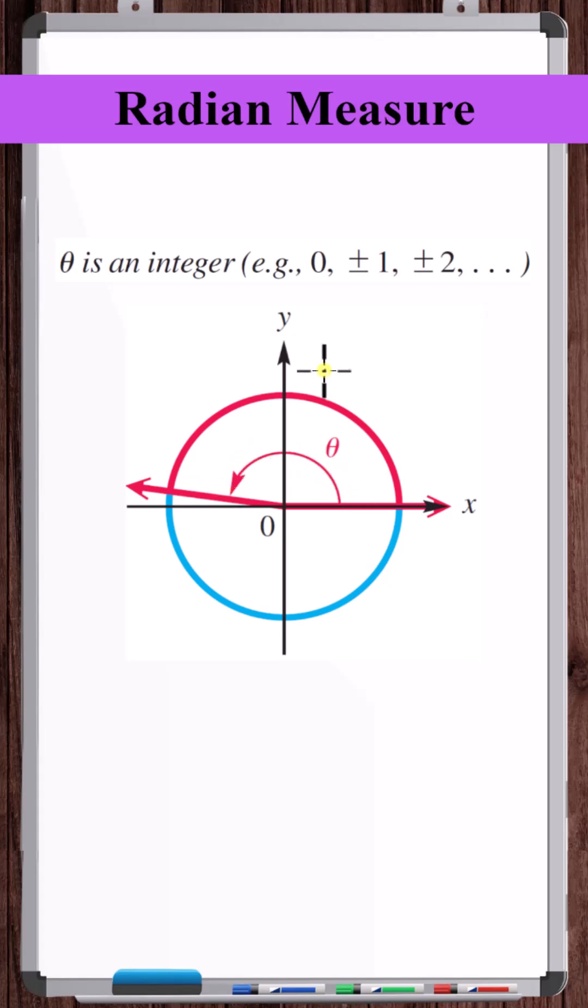The angle theta shown here is measured in radians and is an integer value, so 0 or plus or minus 1, plus or minus 2, etc.